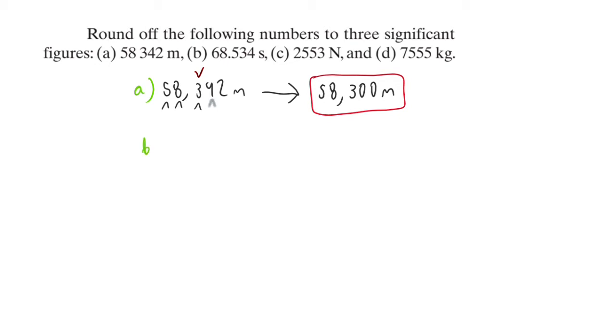B. We have 68.534. Again, the first three numbers are 6, 8, and 5. 3 is smaller than 5, which means the 5 will not round up. So this is our answer.